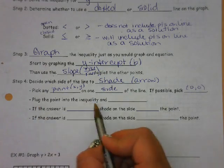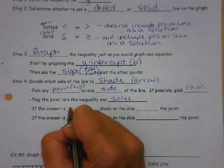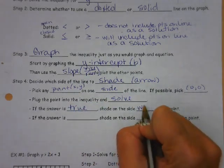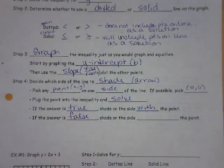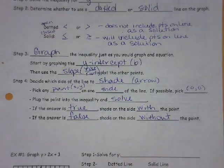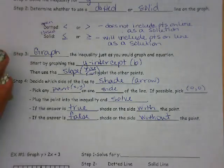Plug the point into the inequality and solve. If the answer is true, shade on the side with the point. If the answer is false, shade on the side without the point. That is one way you can do it. I'm also going to show you a second way, and you can pick what works best for you.